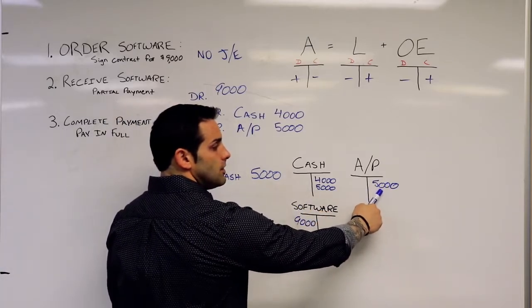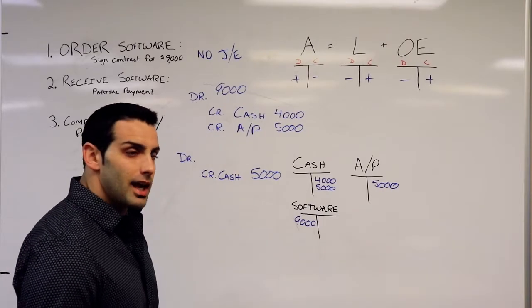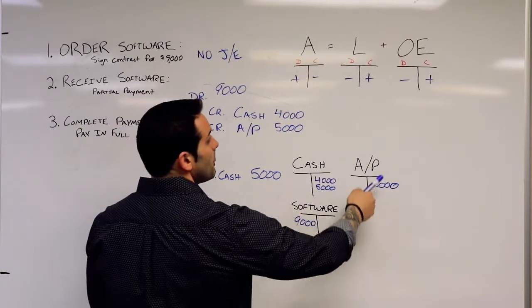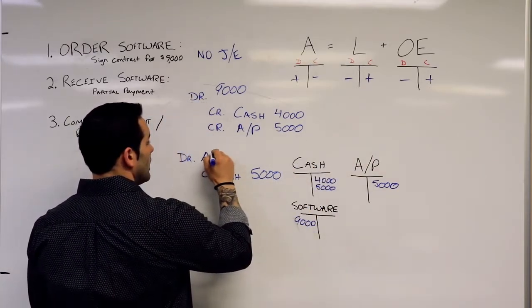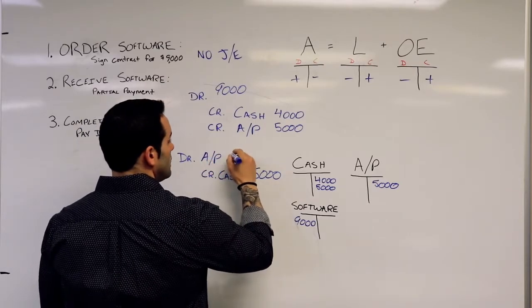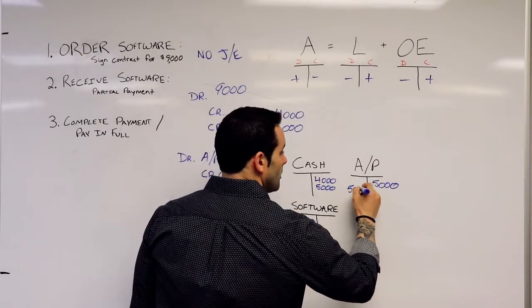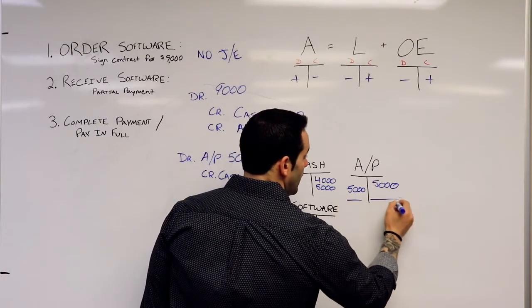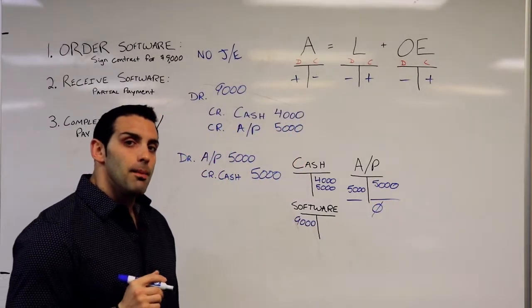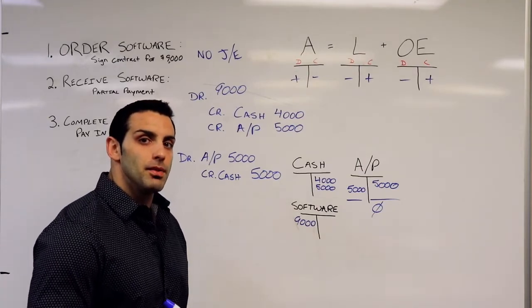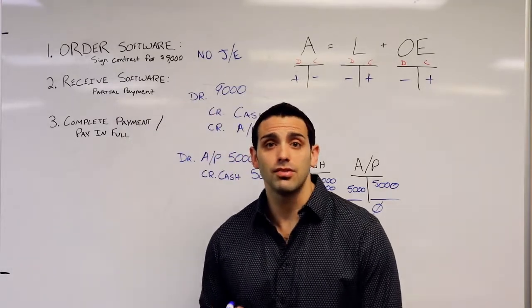I do need to decrease that liability. I need to wipe it out or kill that liability for $5,000. To do that, decreases in liabilities are done with a debit, so this will work out perfect. I'm going to debit that accounts payable for $5,000, add it to my accounts payable T-account, and now I have a zero credit balance. I've successfully paid down that accounts payable to zero, and that's how you account for these type of balance sheet transactions.